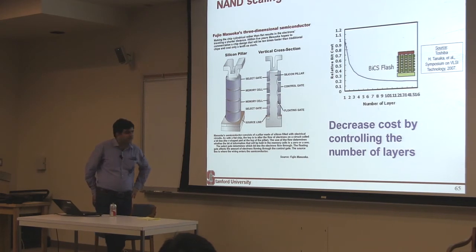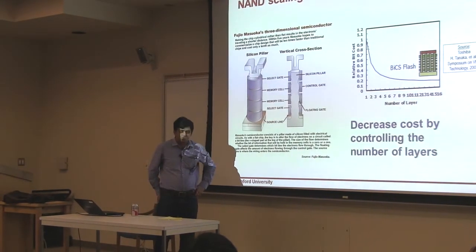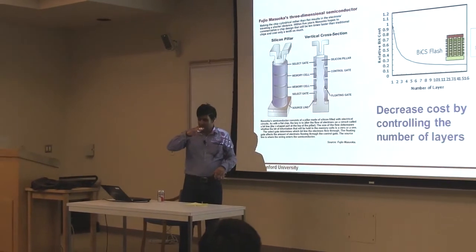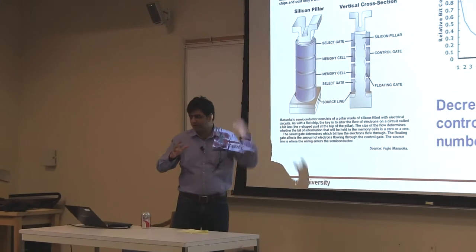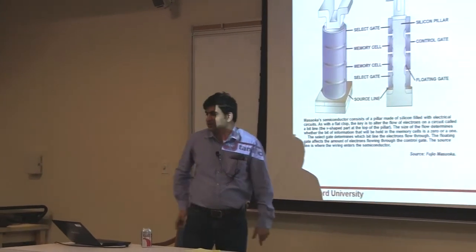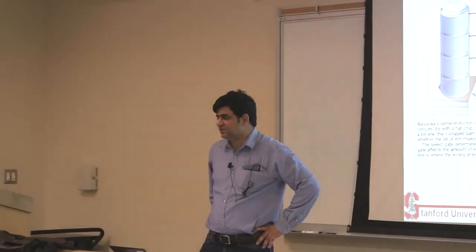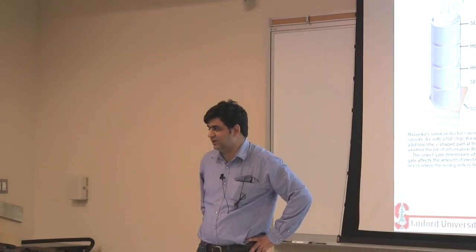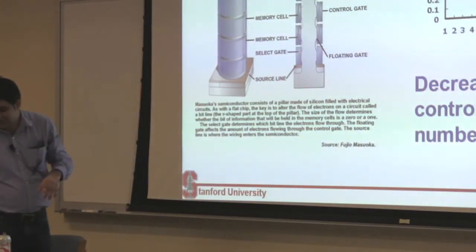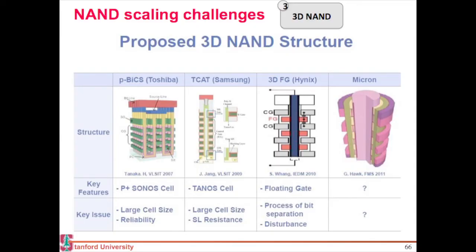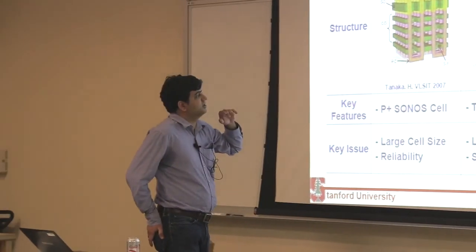There's a different paradigm shift when you go to these 3D devices: the main selling point is you want to get rid of lithography, but at the same time you want a lot of these layers. The current number is somewhere around 64 or 32 layers of transistors stacked vertically. This is an active area of research, and each of the companies in the flash business has a different architecture and a different methodology for doing it.